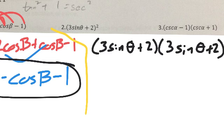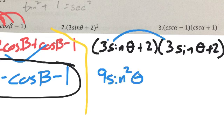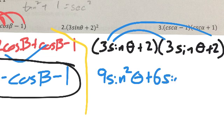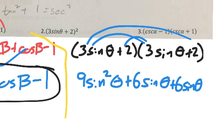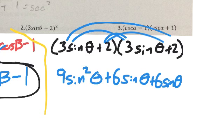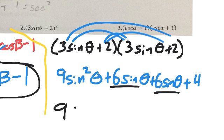So now if I distribute that, 3 sine theta times 3 sine theta is 9 sine squared of theta. 3 sine theta times 2, that's going to be 6 sine theta. 2 and 3 sine theta is another 6 sine theta. And then 2 and 2 is 4. Combine like terms. 6 sine theta and 6 sine theta gives 12 sine theta.